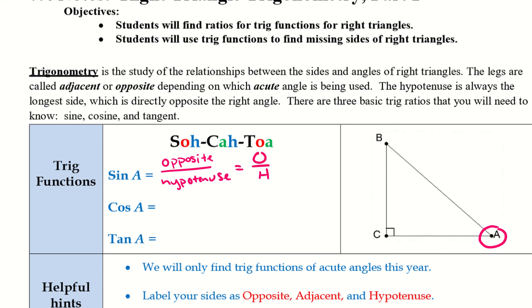So we're going to be using opposite over hypotenuse, which we can write as O over H. Looking at it, that gives us SOH — S represents sine, O represents opposite, and H represents hypotenuse. So we have opposite over hypotenuse.